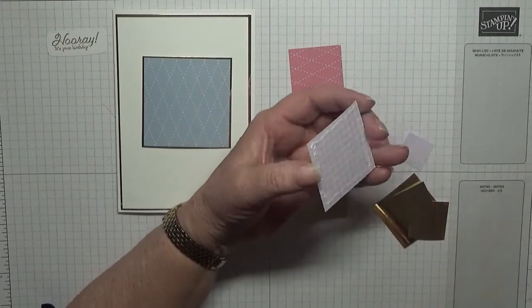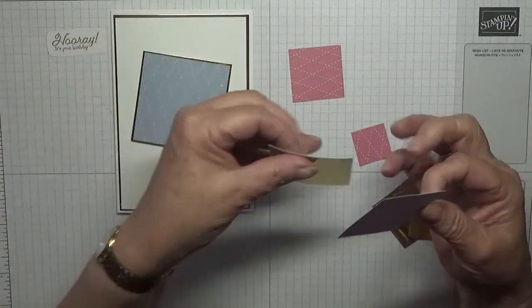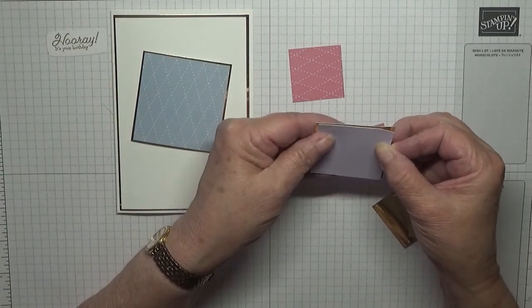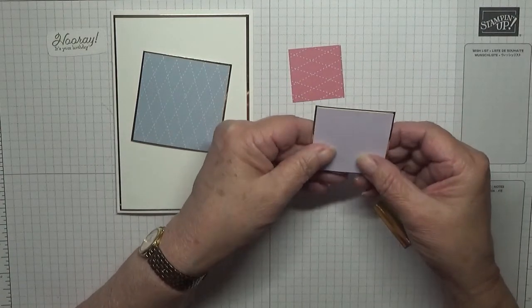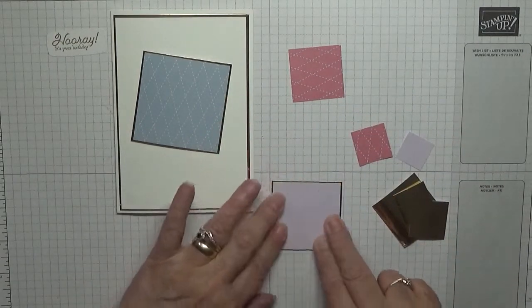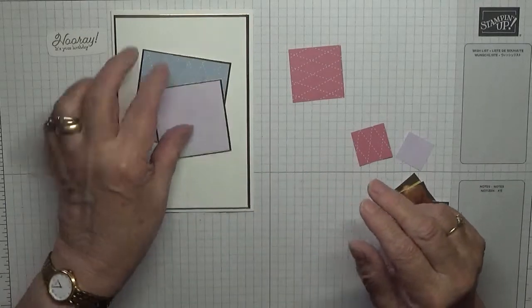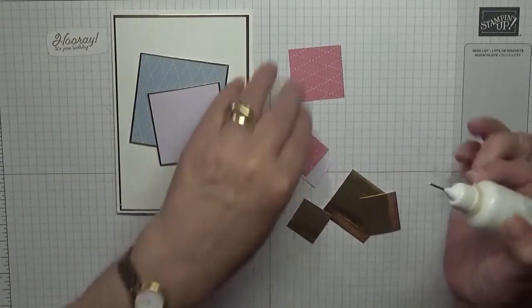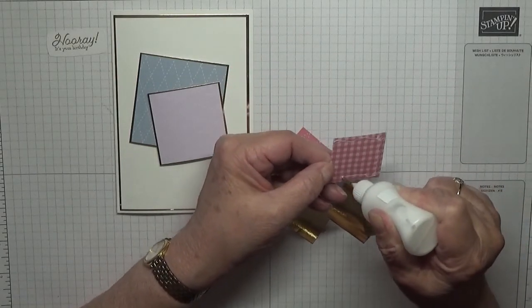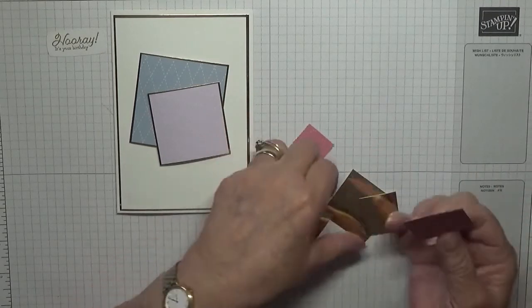She actually did it by inlaying the squares on her card, but my squared dies are not close enough to do this because they leave too big a border. So I thought I would do it with them on top, and I think it just works out just the same.